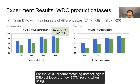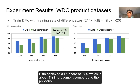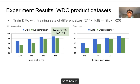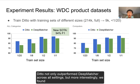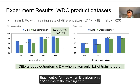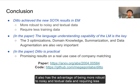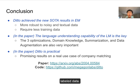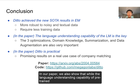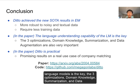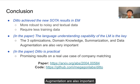For the WDC product matching dataset, DITTO again achieved new state-of-the-art results, reaching an F1 score of 94% — about 4% improvement over the previous best. DITTO not only outperformed DeepMatcher across all settings but also outperformed it when given only half or less of the training data. In conclusion, DITTO achieves new state-of-the-art performance on entity matching by leveraging pre-trained language models, with the advantages of being more robust to noisy and textual data and requiring fewer labeled examples. All three optimizations — domain knowledge injection, summarization, and data augmentation — are shown to be important, and DITTO is demonstrated in a full EM pipeline on a real-world company matching dataset.